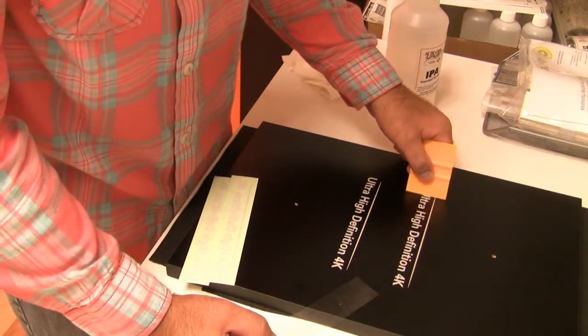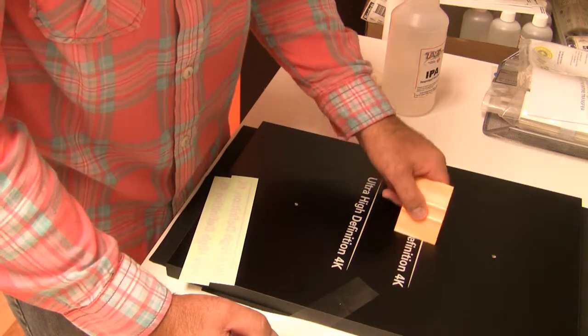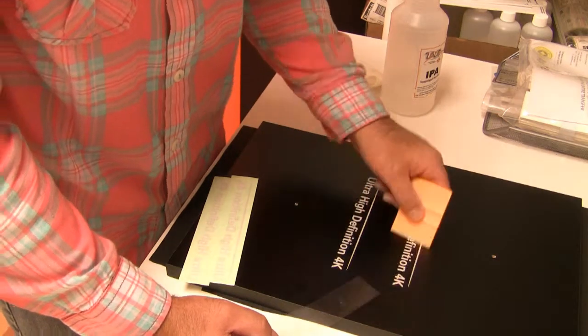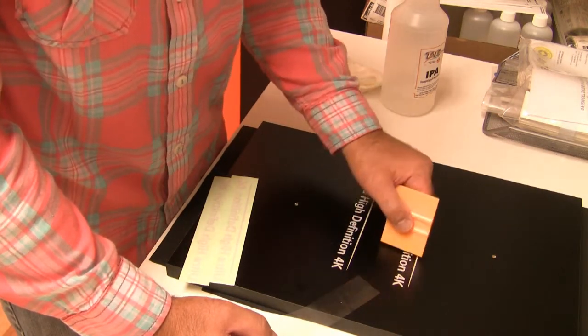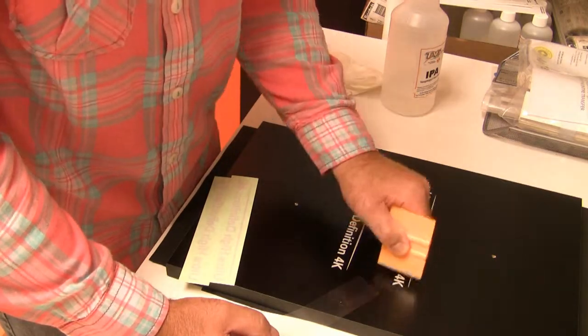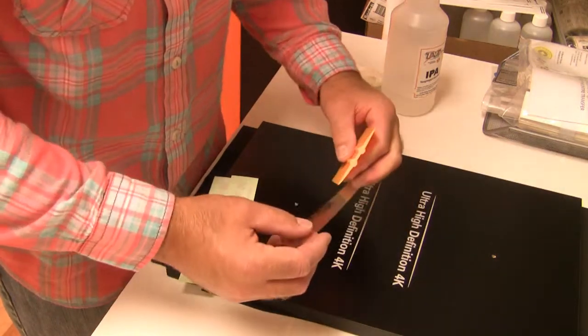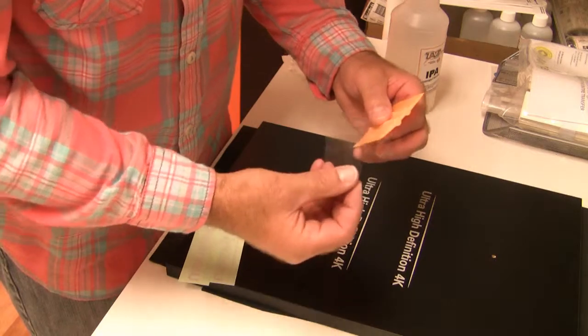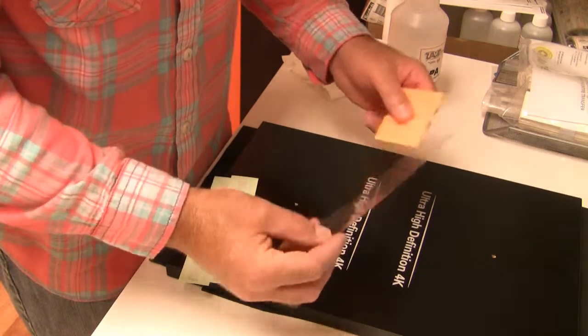The first couple of strokes are going to be with light pressure. Then the next couple, medium pressure, and the final strokes are going to be firm pressure. Okay, and just rub back and forth. You'll hear the transfer kind of snap or break or crack away from the ink.